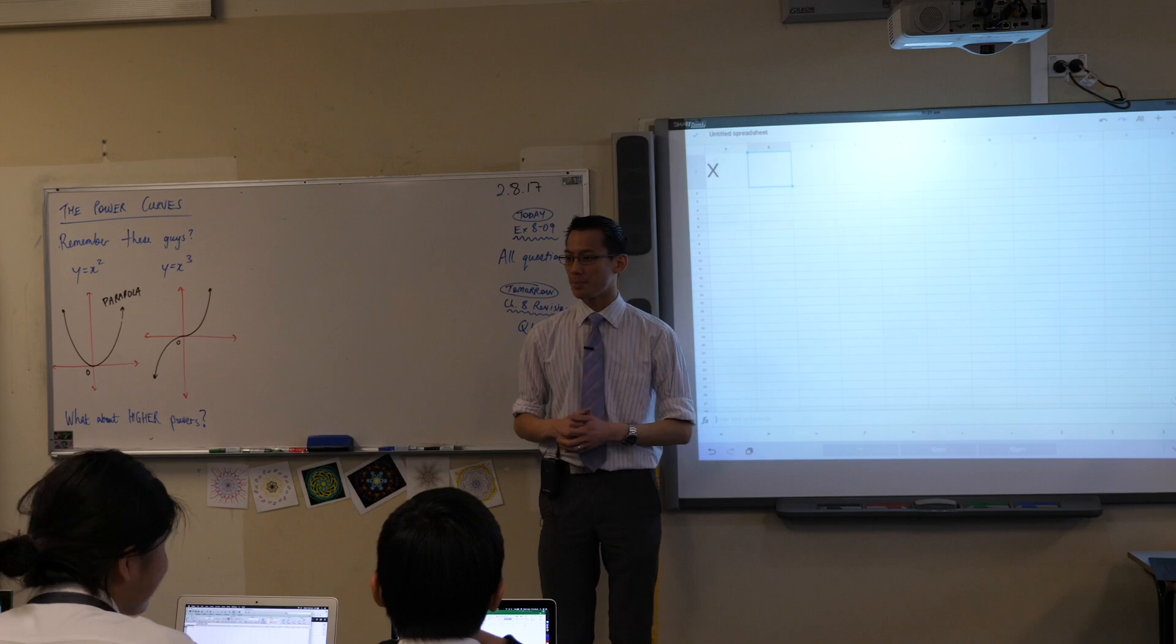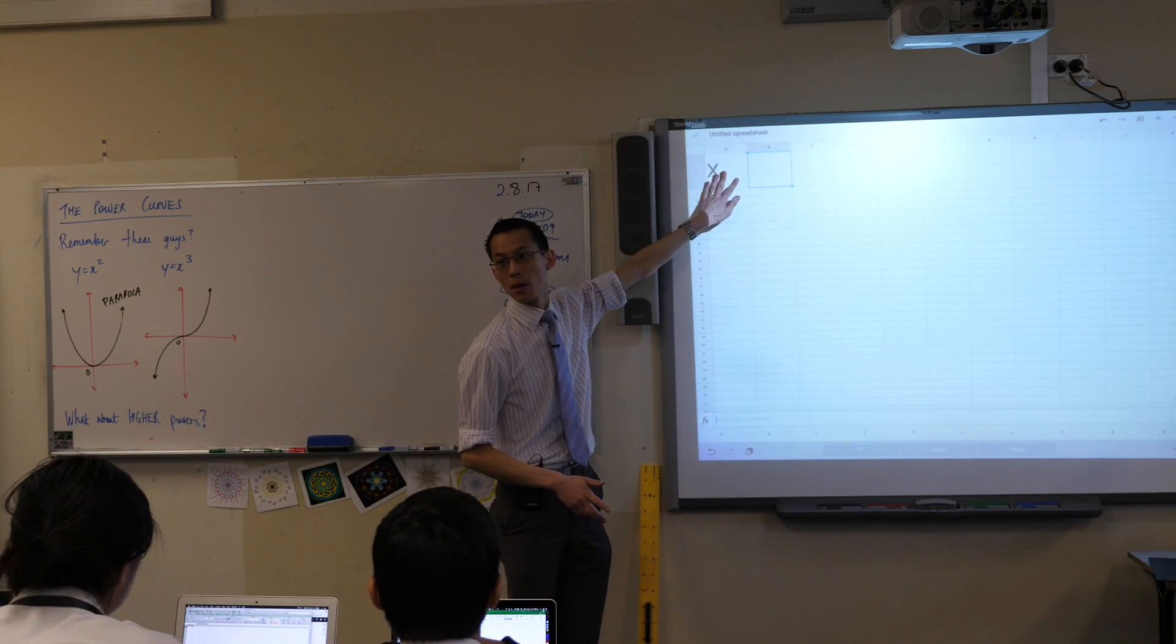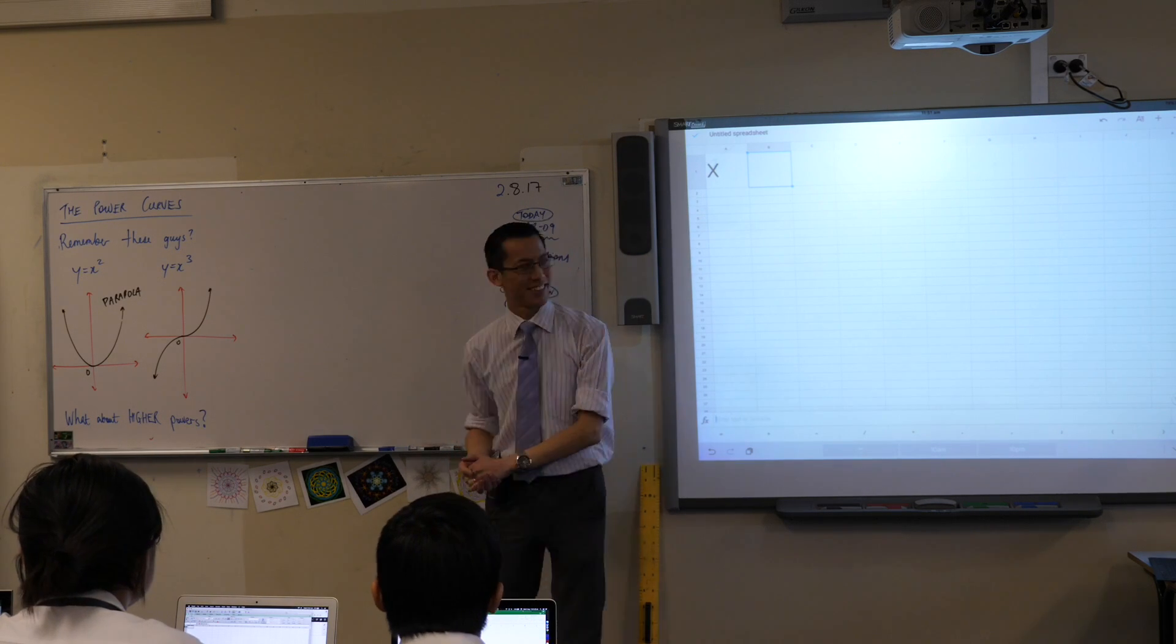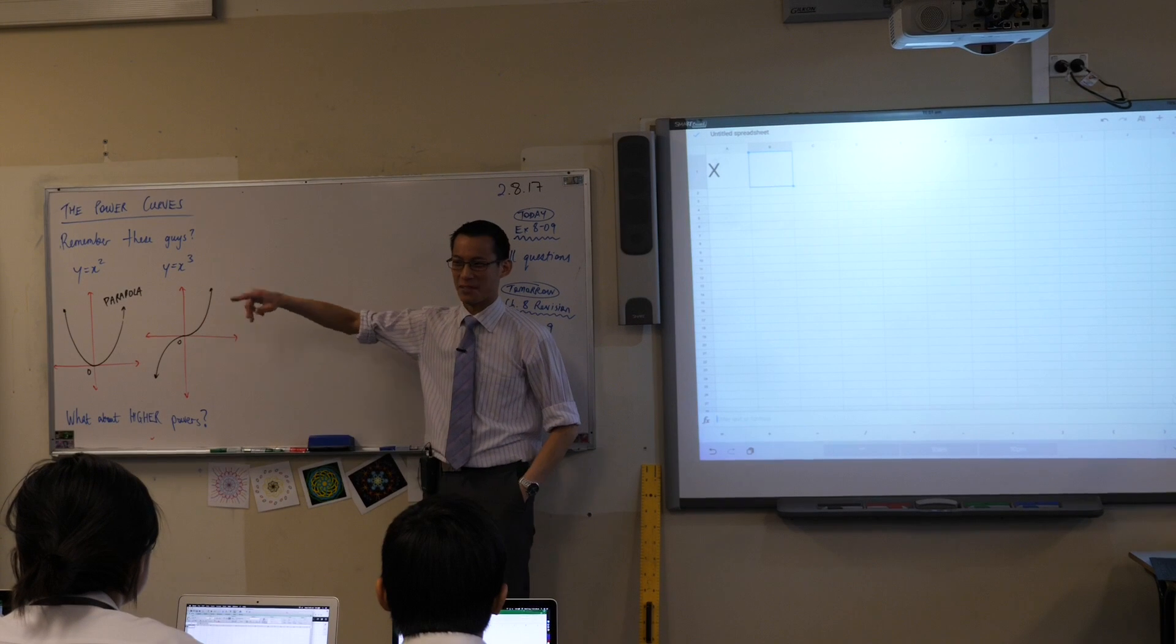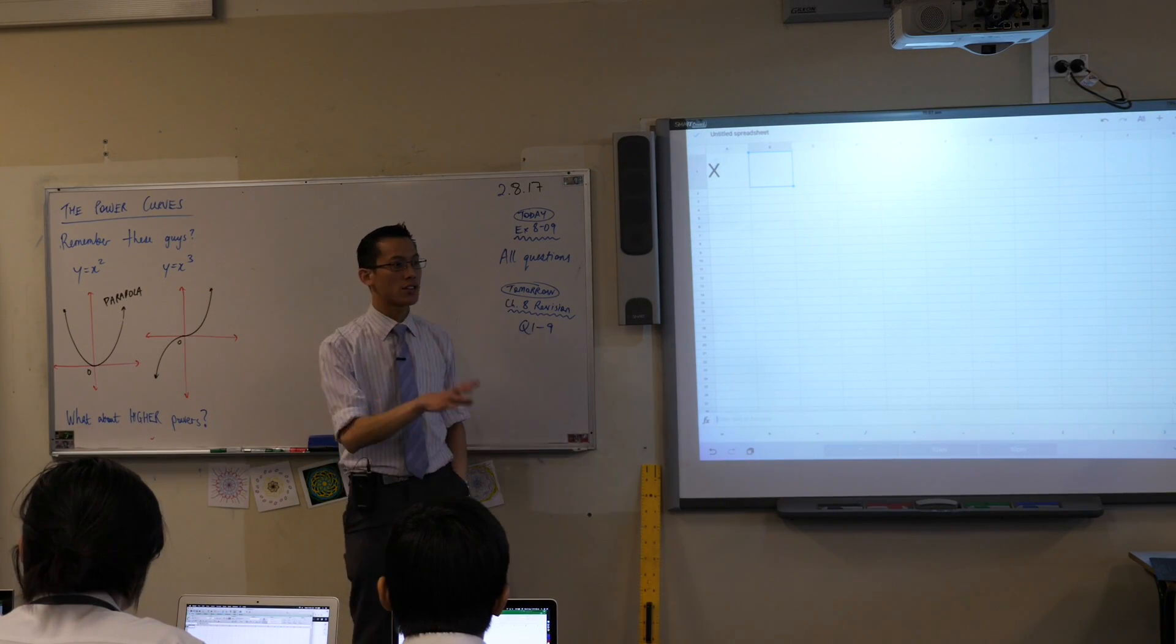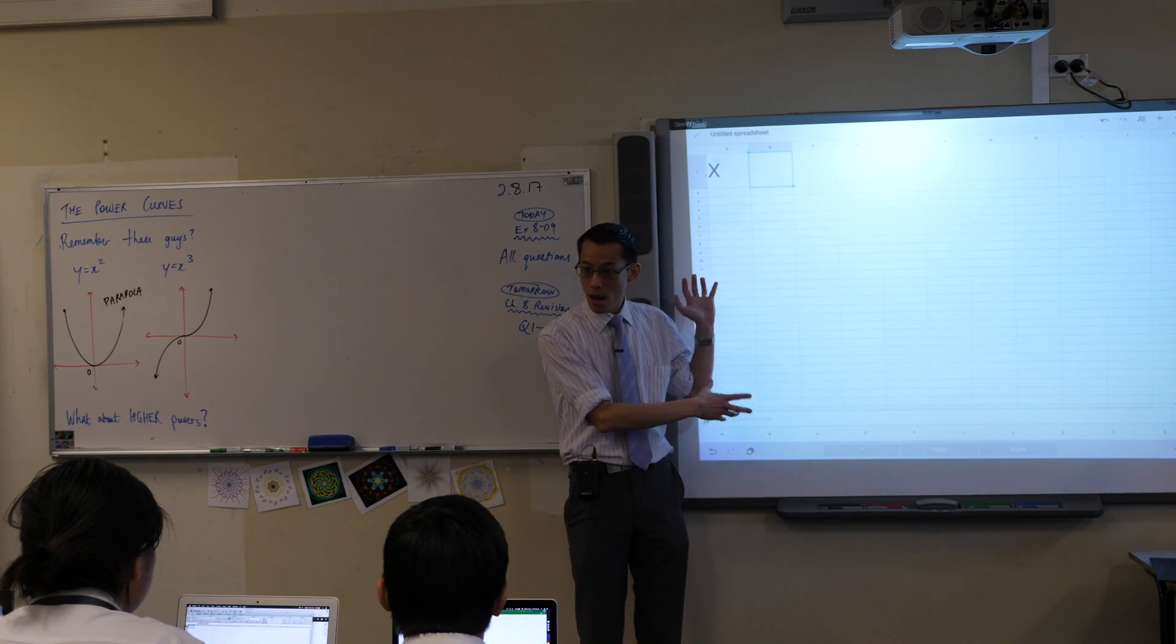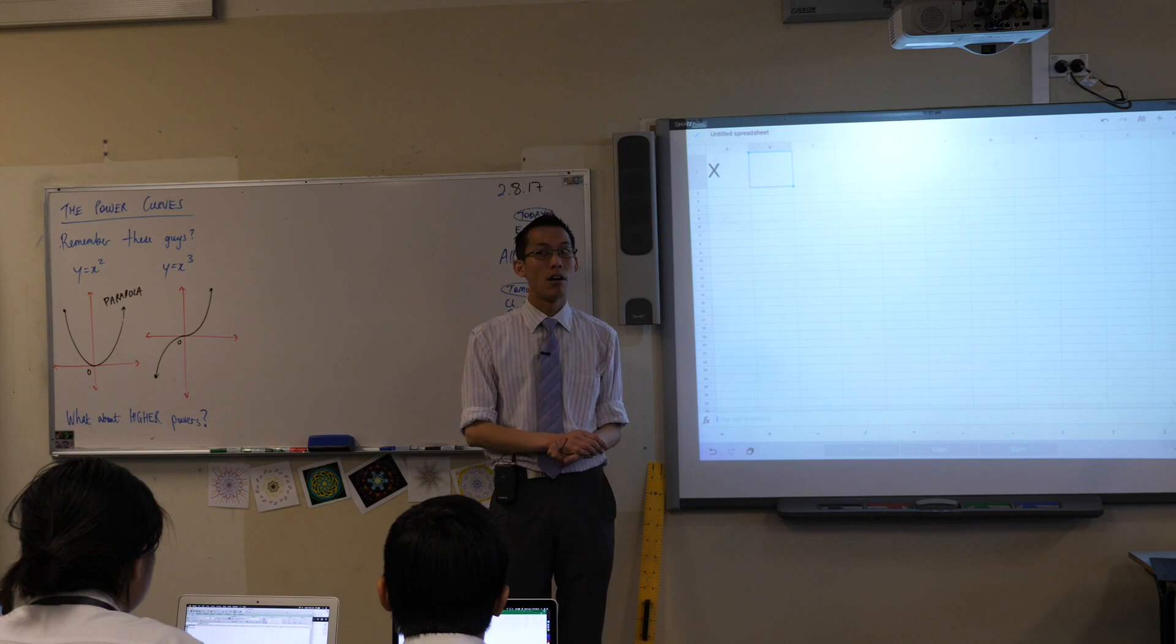You've got a spreadsheet set up. All you need to have for starters is just the letter X in the top left-hand corner. When we were understanding this graph, I asked you to do a table of values. That's what this is going to do for us, but it's going to do all the legwork for us because I'm going to ask you to do a lot of values.